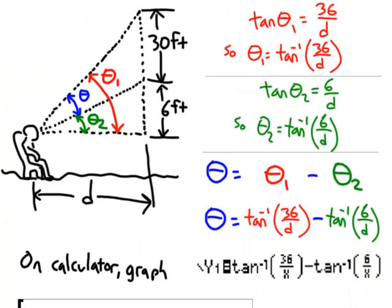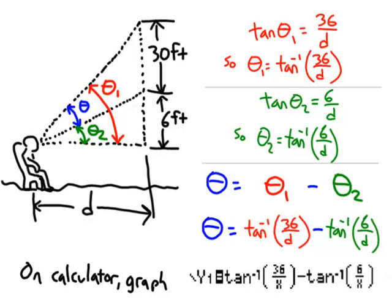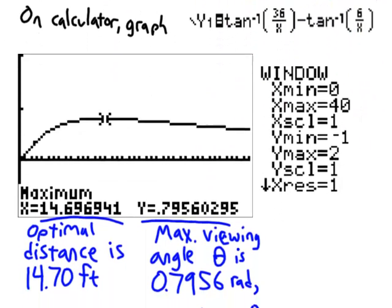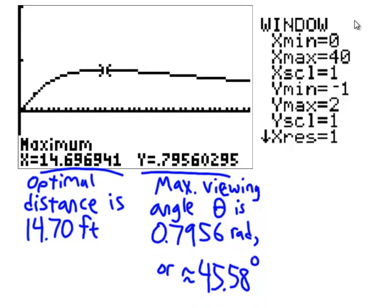Here's the picture for the solution — it's very consistent with what I did in the last example. There's the viewing angle theta, as well as the equation to type into the calculator. With the appropriate window settings, we find that the maximum viewing angle is about 45.58 degrees, or 0.7956 radians, and that is achieved at 14.7 feet. If you had any trouble with this, come see me.